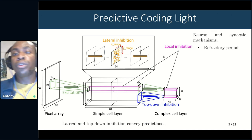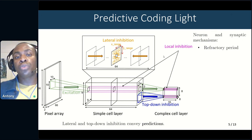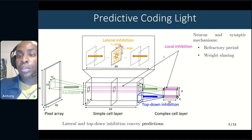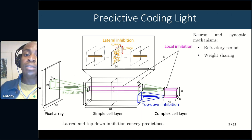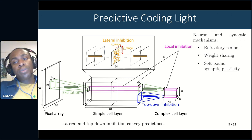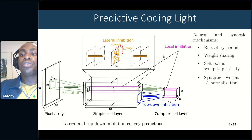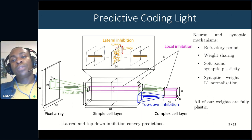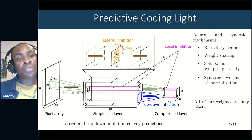We also have a top-down inhibition mechanism where complex cells inhibit simple cells from their input zone. It is through this lateral and top-down inhibition that predictions are conveyed — complex cells inhibit simple cells from spiking if the information is already present in the neural code, and similarly other simple cells prevent redundant spikes. Additional mechanisms include a refractory period on leaky integrate-and-fire neurons, a weight-sharing mechanism applied on excitatory and local inhibitory weights, spike-timing-dependent synaptic plasticity, and synaptic weight L1 normalization. All weights are fully plastic, learned with STDP rules.